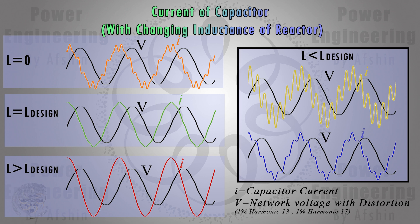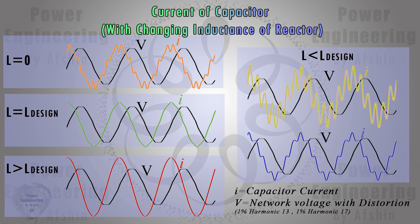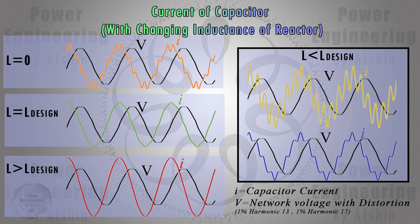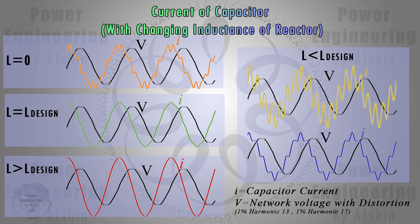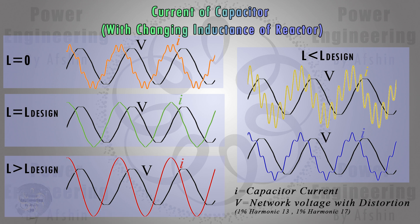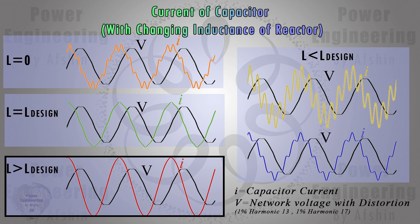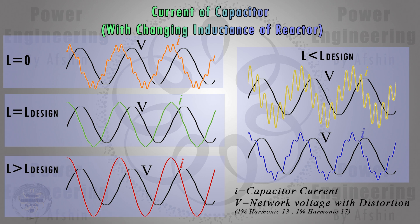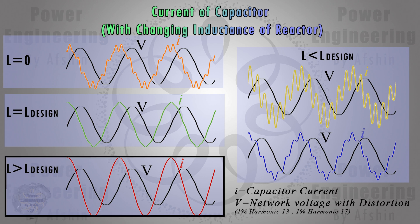If the detuning reactor value is lower than required, two issues may occur: high frequency harmonic currents will be generated in the capacitor, and resonance may occur between the inductor and capacitor at high frequencies. Both issues can lead to overheating and overcurrent in the capacitor. Additionally, if the detuning inductor value is higher than required, it can resonate with the capacitor at low frequencies, which is very dangerous and can cause severe problems in the network.